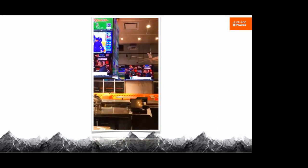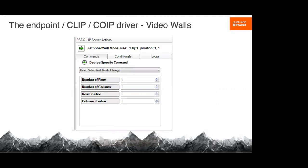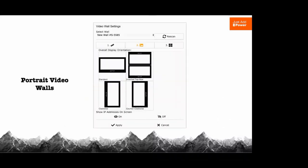Any screen at any time can be a video wall or a single screen. Within our drivers you can see how simple we made it — basically how many rows do I have, how many columns do I have, and what row and column is that particular Just Add Power receiver in. From there we can build up to a 16-by-16 video wall. We also do portrait video walls — we can flip and rotate images within the receivers themselves, giving us the ability to do things like a menu board or airport installations in portrait mode.